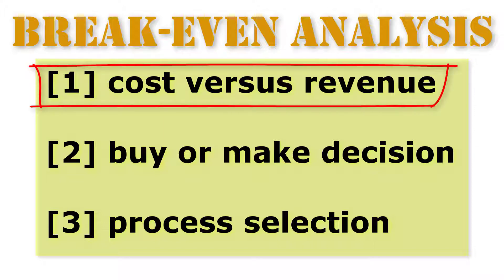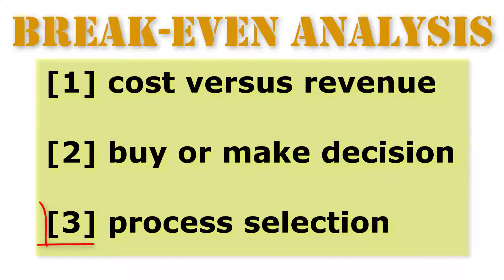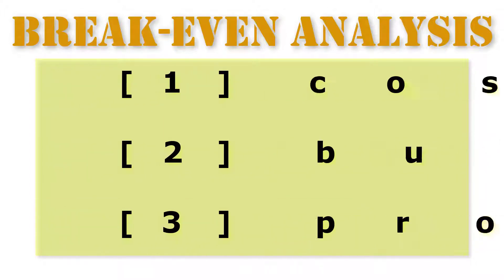1. Determine the quantity of sold units at which the costs equal revenues. 2. Find the quantity demanded at which the buying costs equal the internal production costs. 3. Compare business processes and determine the lowest cost for requested quantity range. Let's get started on the first application.